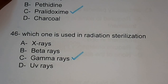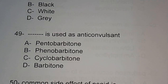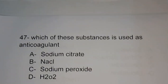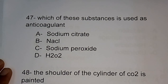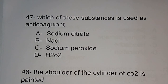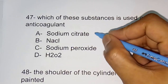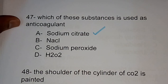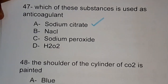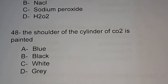Question number 47: which substance is used as an anticoagulant? Options are sodium citrate, sodium chloride, sodium peroxide, hydrogen peroxide. Option A is the correct answer — sodium citrate is used as an anticoagulant. Question number 48: the shoulder of the cylinder of carbon dioxide is painted with — blue, black, white, or grey. The correct answer is grey.